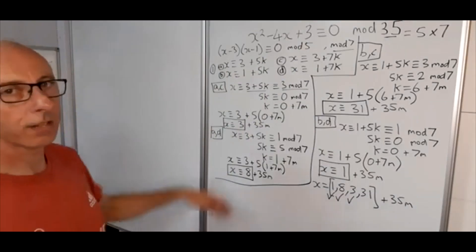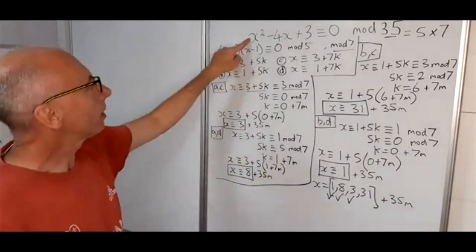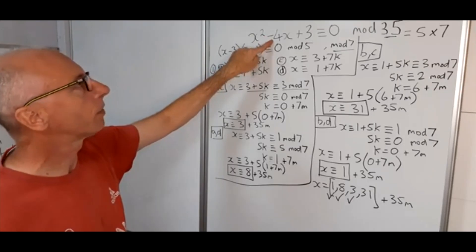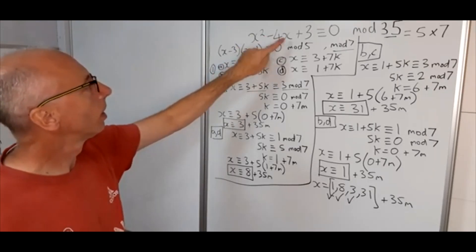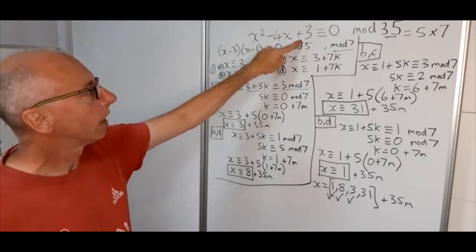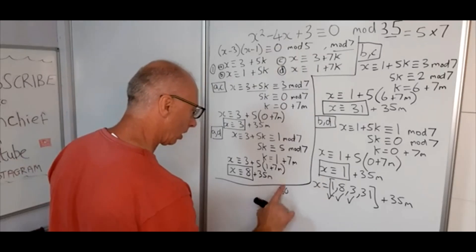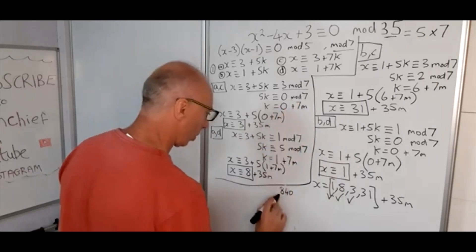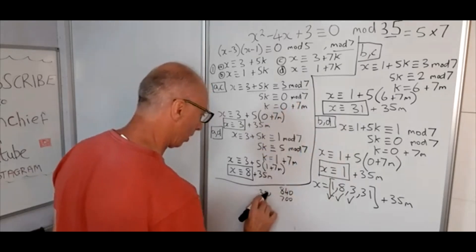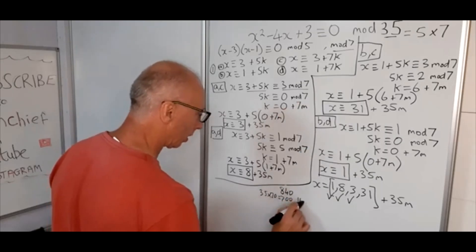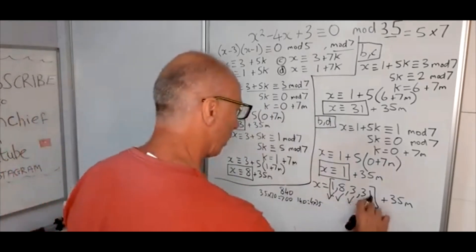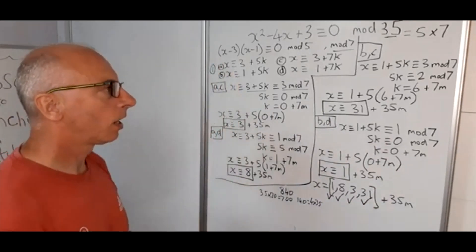Okay, 31, let's see if we can do this one. 31 squared is 961, 4 times 31 is 124, 961 minus 124 is 837, plus 3 is 840. Now 840, let's just check that, so 700 we know is 35 times 20, that leaves 140, which is 4 times 35, and thankfully that then ticks the box for 31. Okay, thank you very much.